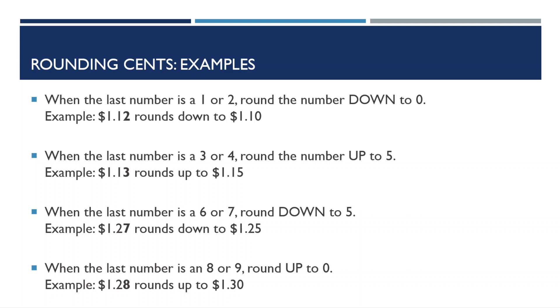When the last number is a six or a seven, round down to five. So, $1.27 rounds down to $1.25. And when the last number is an eight or a nine, round up to zero. So, $1.28 would round up to $1.30.